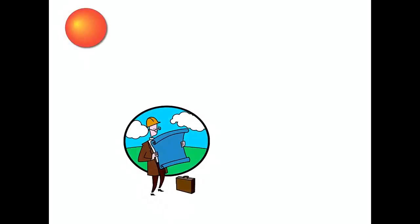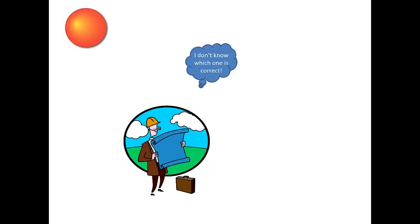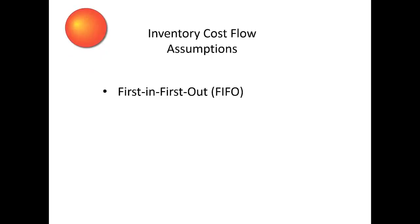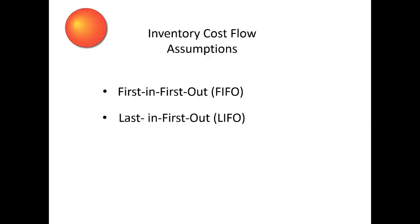When management cannot specifically identify the unit cost of what was sold, it has to use a cost flow assumption to record the expense – it is simply the best management can do with the information available. The three most common cost flow assumptions are: First In, First Out (FIFO); Last In, First Out (LIFO); and Moving Weighted Average.